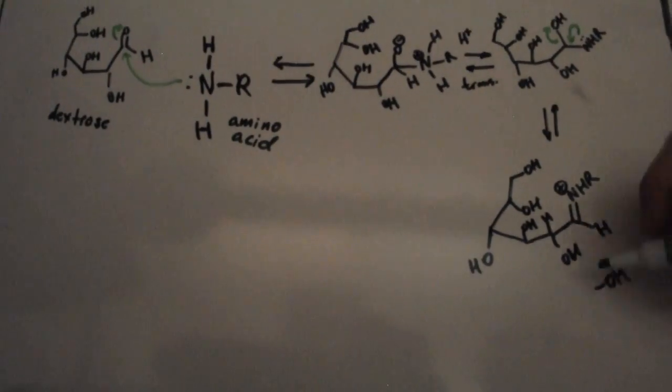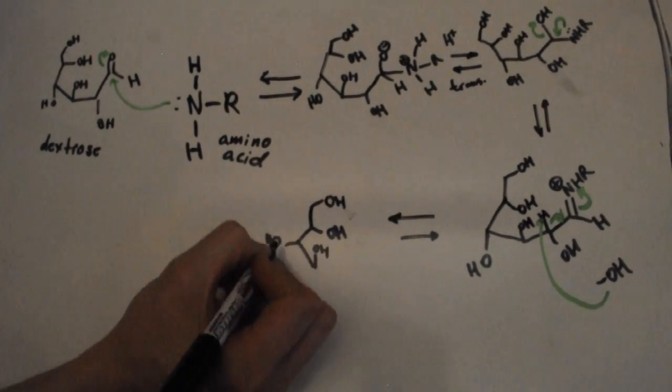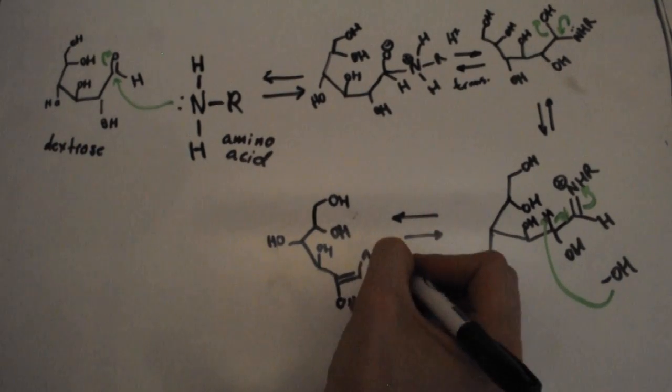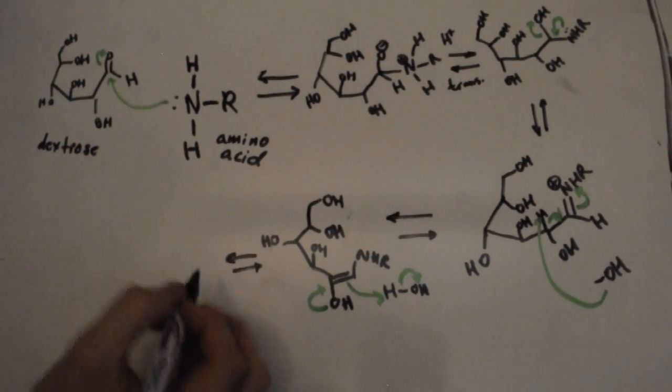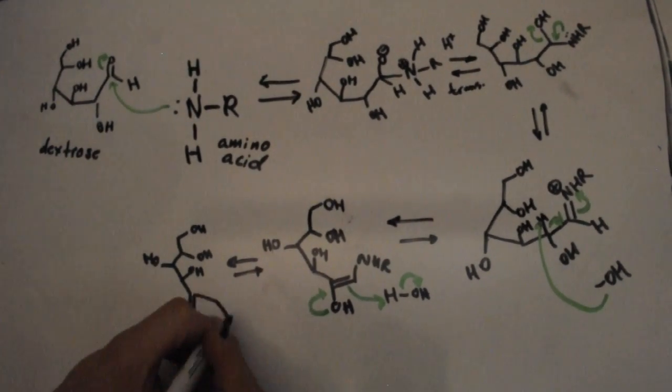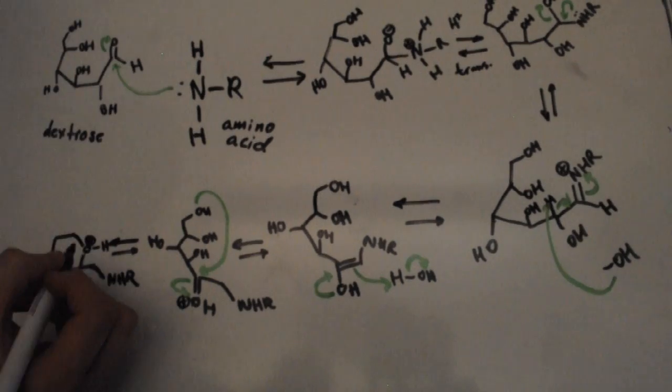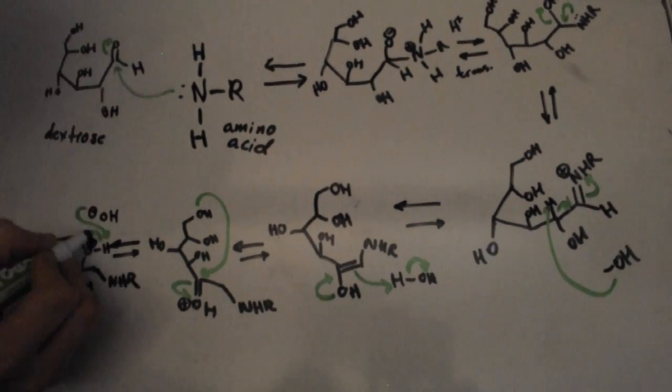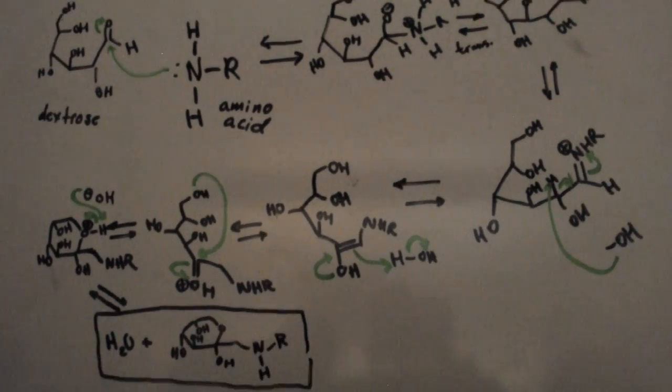The alpha carbon is then deprotonated to generate a double bond between carbon 1 and carbon 2. The lone pair of the alcohol on carbon 2 then pushes down to form a double bond, and the double bond between carbons 1 and 2 grabs a proton. The alcohol on carbon 6 then adds 1,2 to the carbon 2, cyclizing the molecule into an N-substituted glycosilamine.